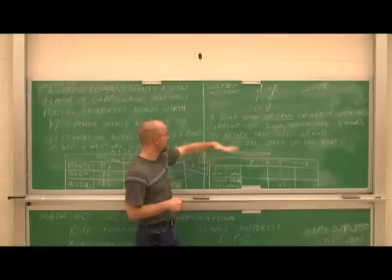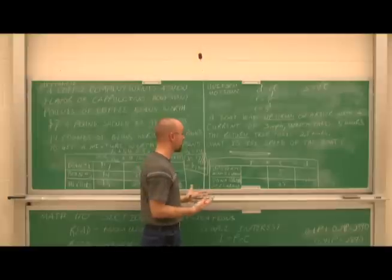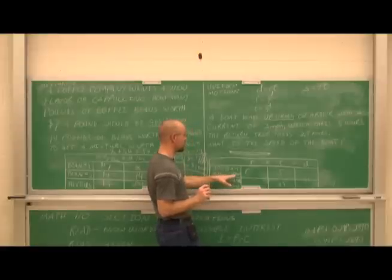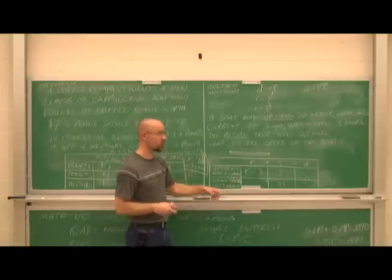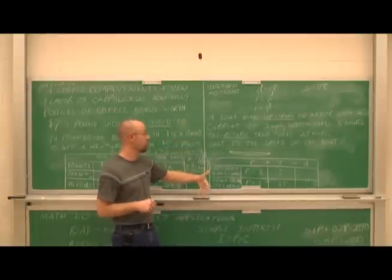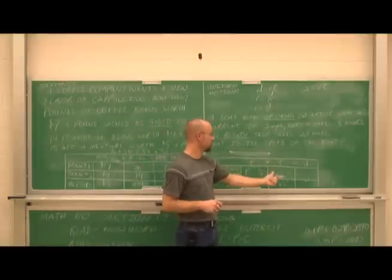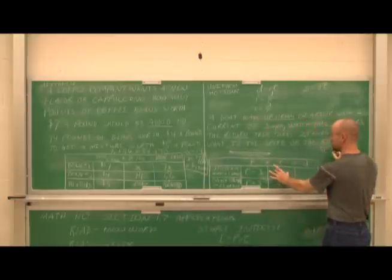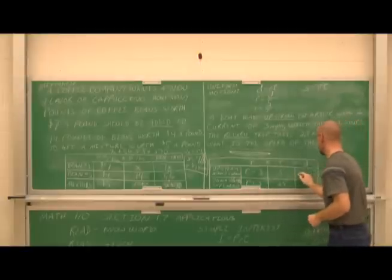Reading it a third time: what do I need to find? The speed of the boat. I'll call that variable r. But going upstream, the boat is fighting the current, so its effective rate is r − 3. Going downstream, the current helps, so the effective rate is r + 3. Since the distances are equal, rate times time upstream equals rate times time downstream. My equation is: 5(r − 3) = 2.5(r + 3). Distributing and combining like terms: 5r − 15 = 2.5r + 7.5, which gives 2.5r = 22.5.